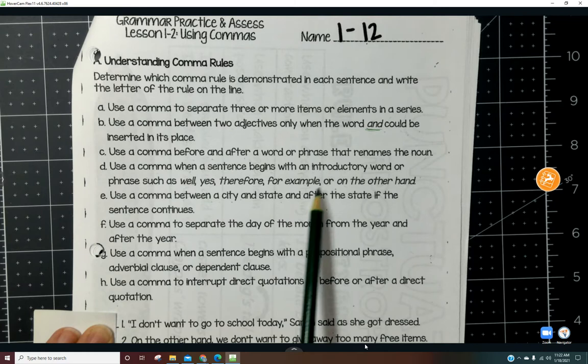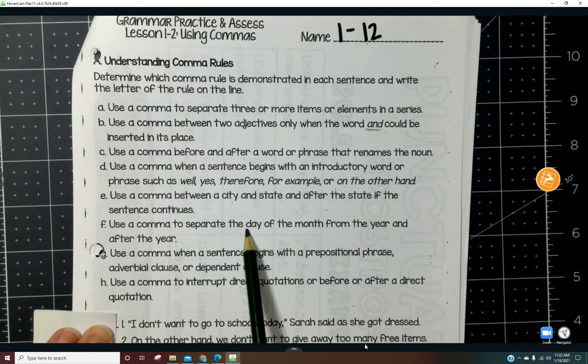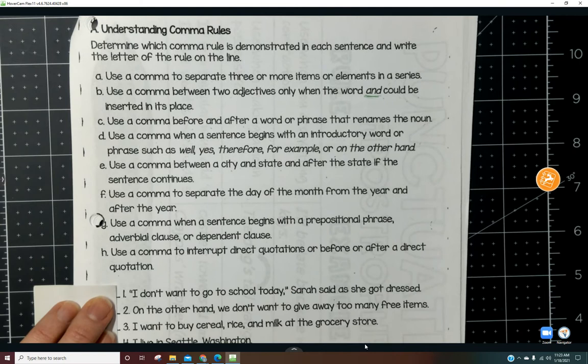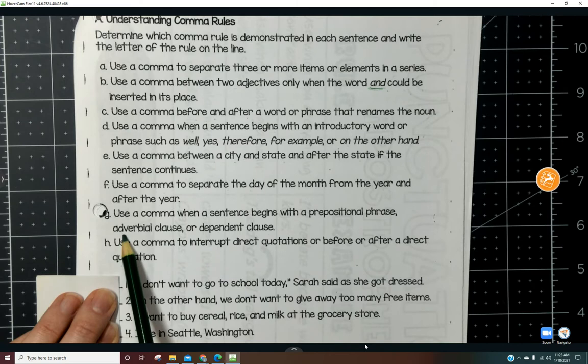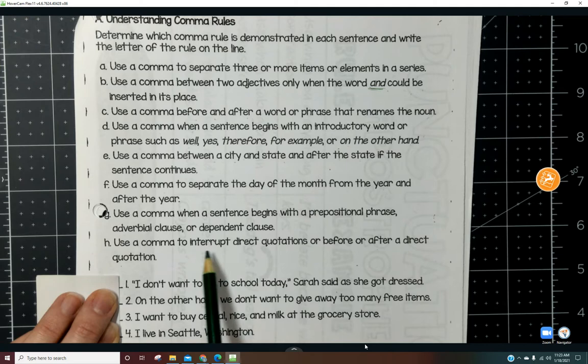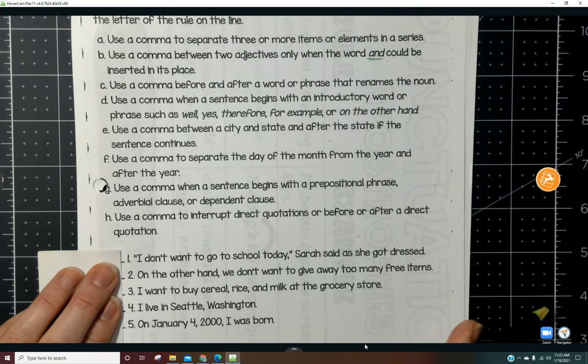Use a comma between a city and a state and after the state if the sentence continues. Use a comma to separate the day of the month from the year and after the year. Use a comma when a sentence begins with a prepositional phrase, adverbial clause, or dependent clause. Use a comma to interrupt direct quotations or before or after a direct quotation.